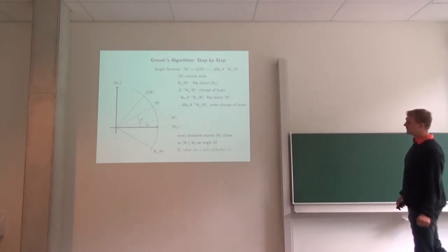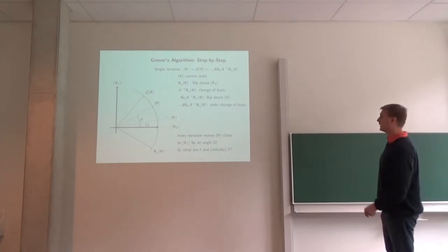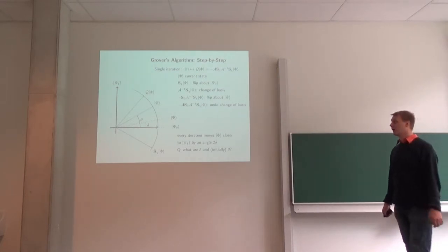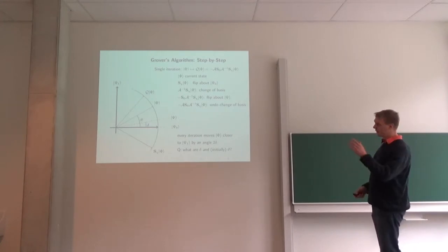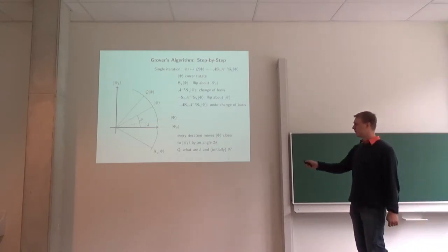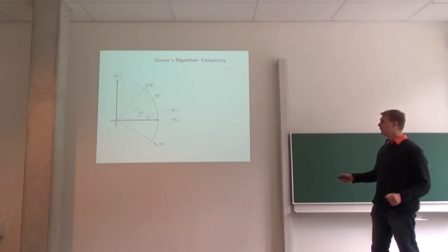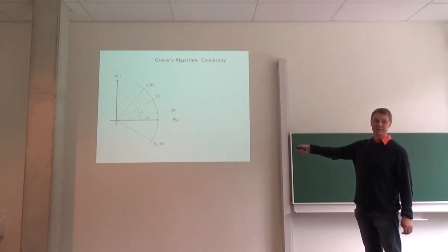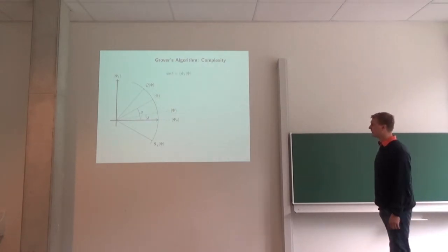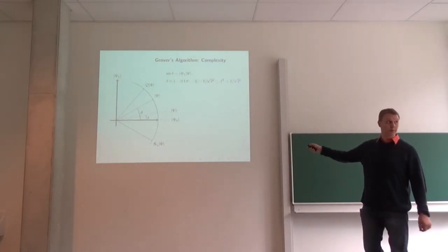The question is: what is theta initially (the initial angle), and how many iterations are necessary? We know we have to traverse roughly 90 degrees, so if we know delta we can compute the number of iterations. The uniform superposition of all states, written out fully, gives a very large sequence of 1 over sqrt(2^k) terms. Delta is the sine of this angle, which we compute from the inner product between psi and A.